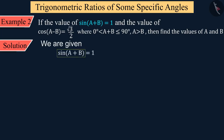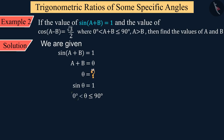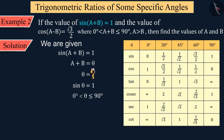We are given the trigonometric ratio sin(A + B) on the left side and 1 on the right side. So we need to know for which value of θ, where θ is greater than 0° and less than or equal to 90°, sin θ equals 1. By looking at the table, we can tell that sin 90° equals 1, so θ equals 90°. We write sin 90° in place of 1 on the right side.